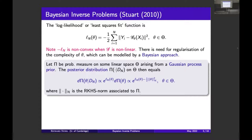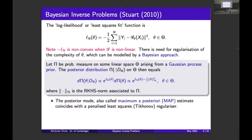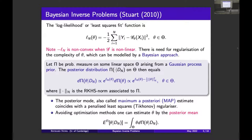The Bayesian approach starts with a prior — a probability measure on the function space of theta — for example a random Gaussian field on the domain, exponentiated to make it positive. Then you have the likelihood, which in a Gaussian regression model is the exponential of the negative least-squares fit, giving a posterior distribution. Philosophically, this is just a penalized least-squares problem: you take the likelihood and re-weight it by a penalty from the prior. You must choose a reproducing kernel Hilbert space norm — for a Gaussian process prior this determines the covariance structure, typically a Sobolev space. Rather than maximizing the posterior, you could compute the posterior mean by averaging, using MCMC methods.